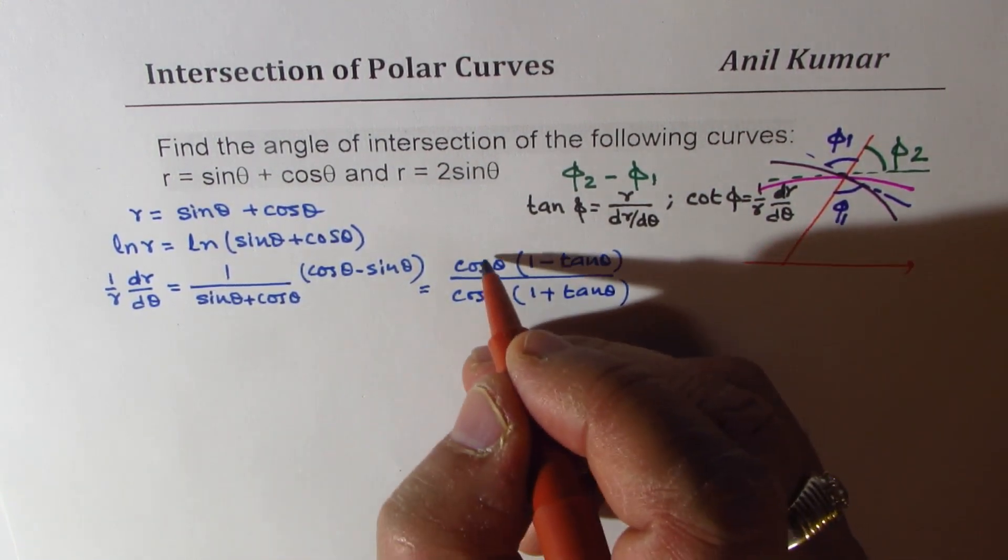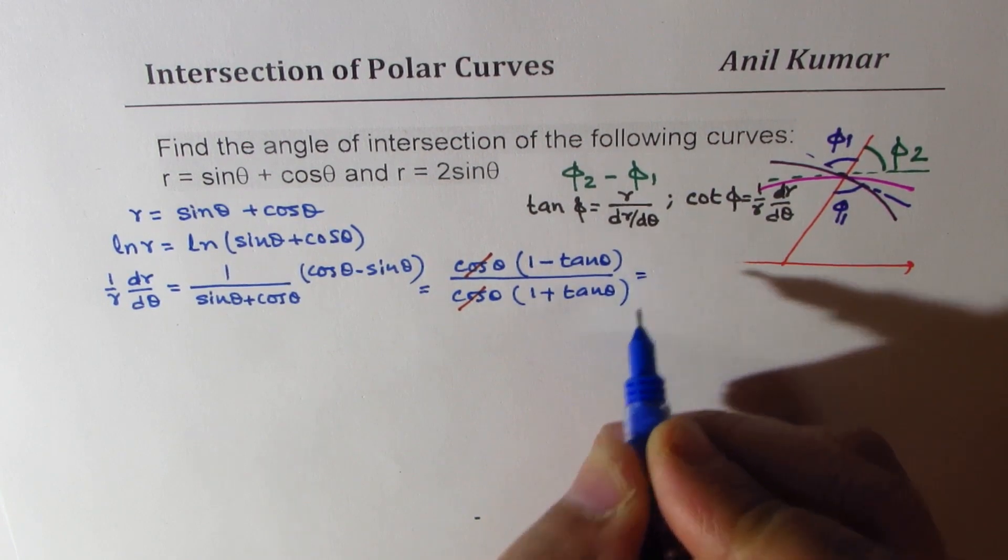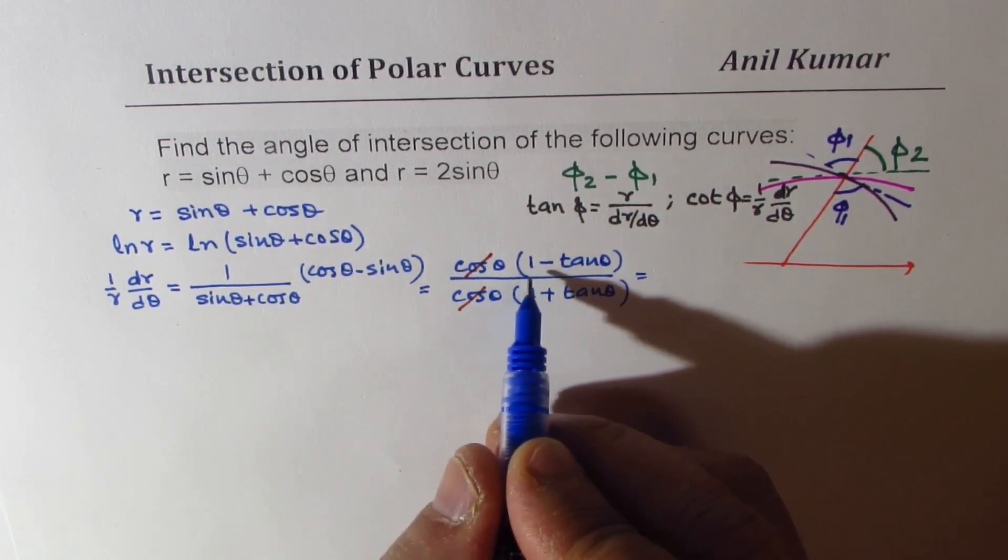Now, cosine theta cancel out. 1 minus tan theta, 1 plus tan theta, could be written as 1 over tan pi by 4, and then we'll use the compound angle formula.